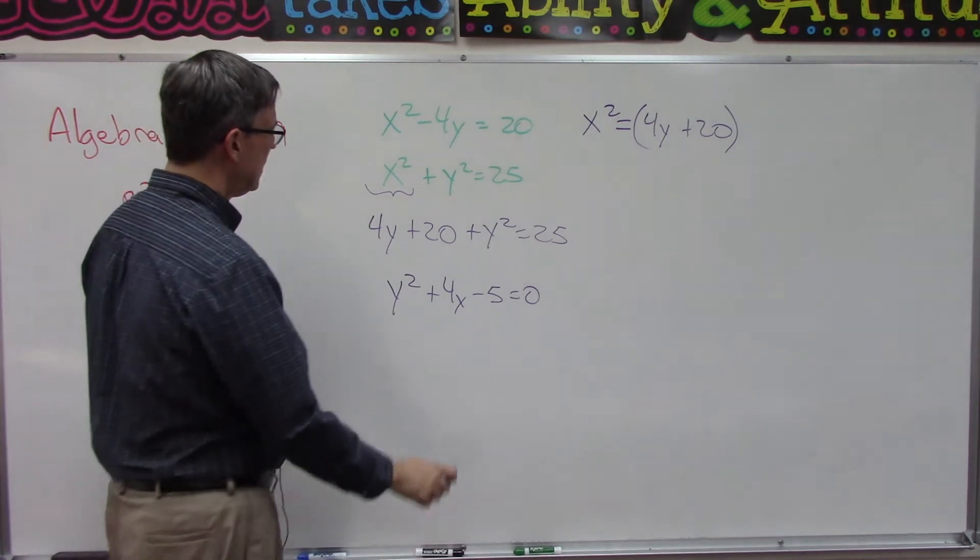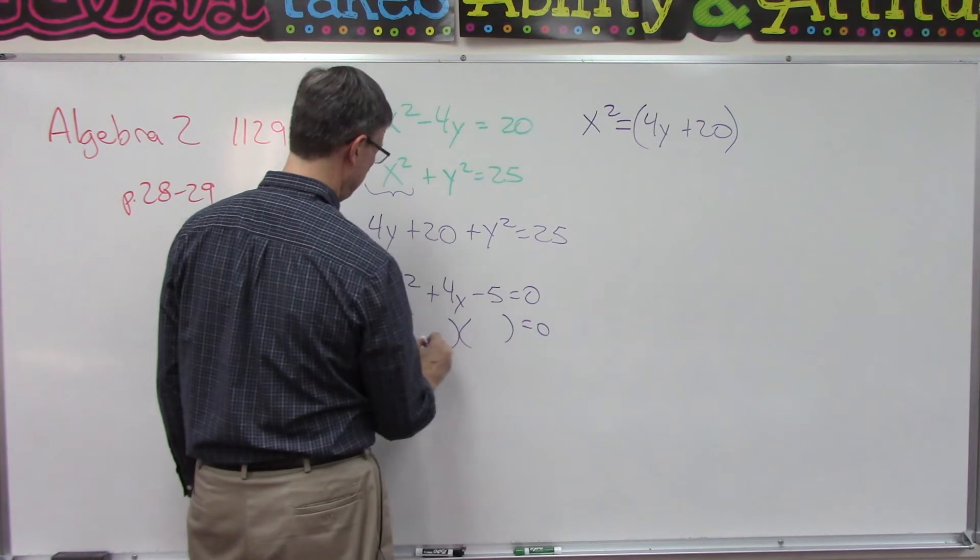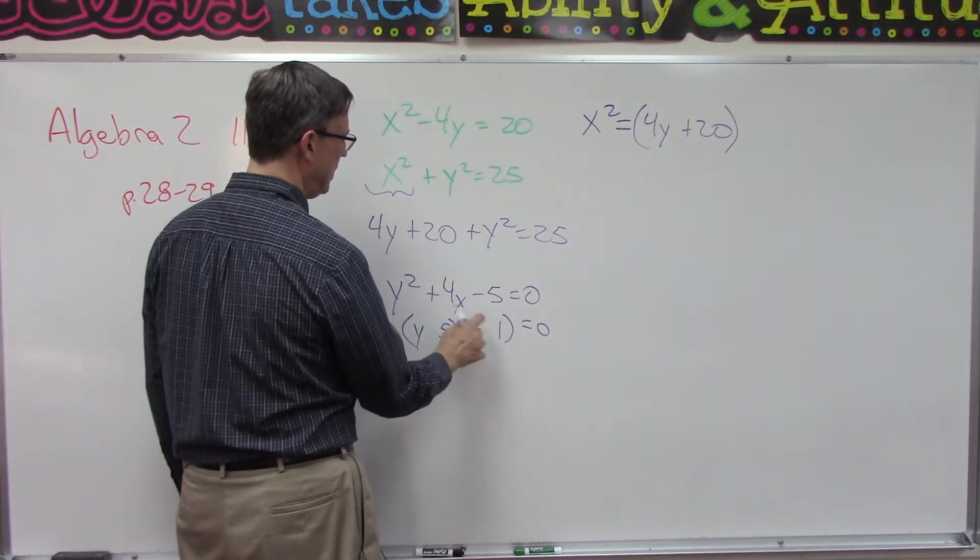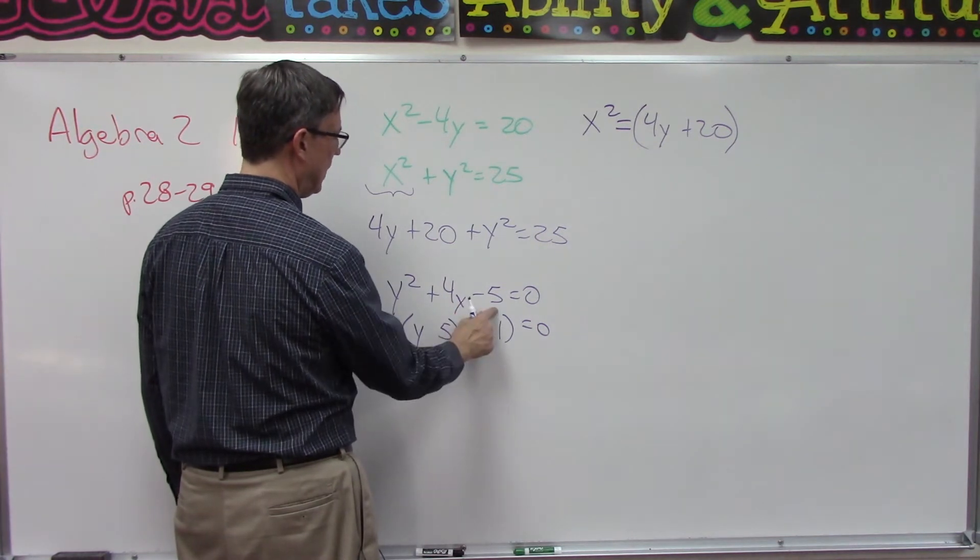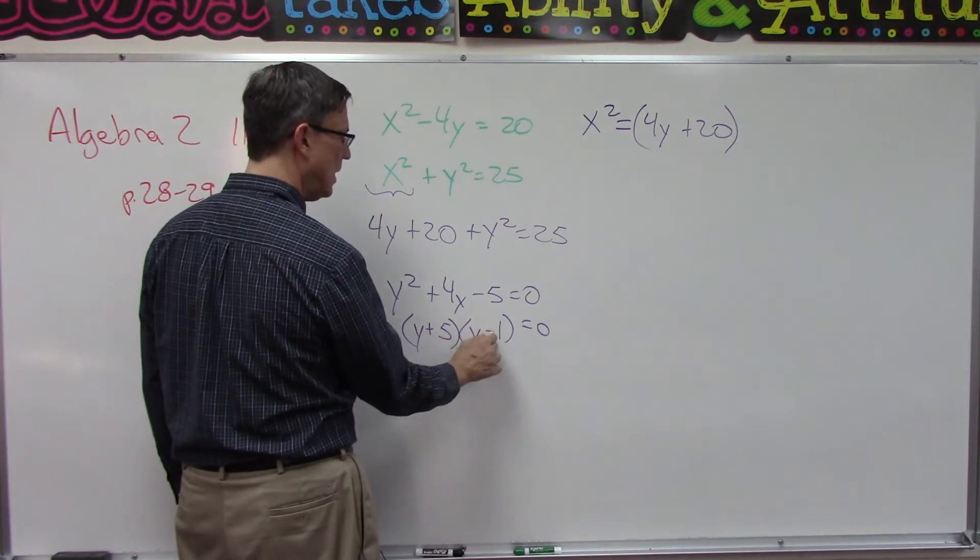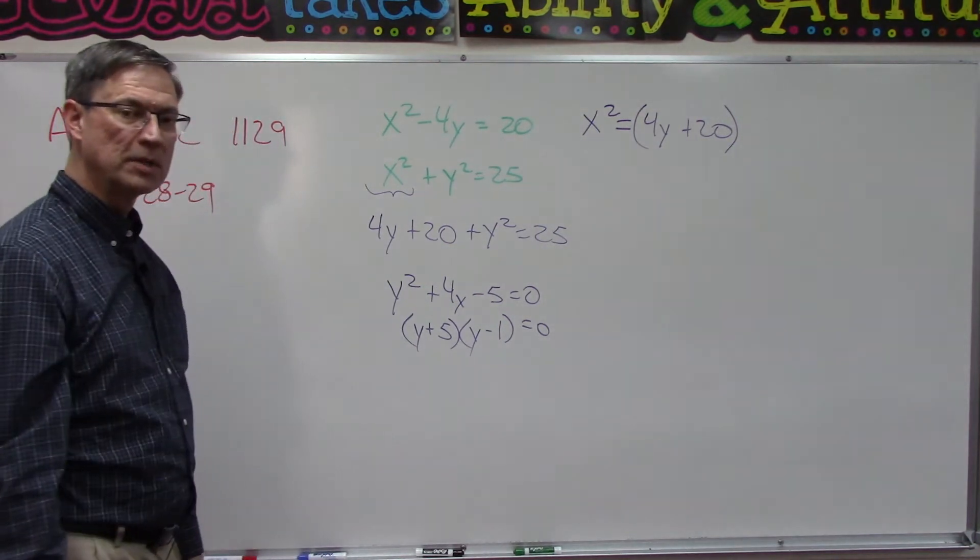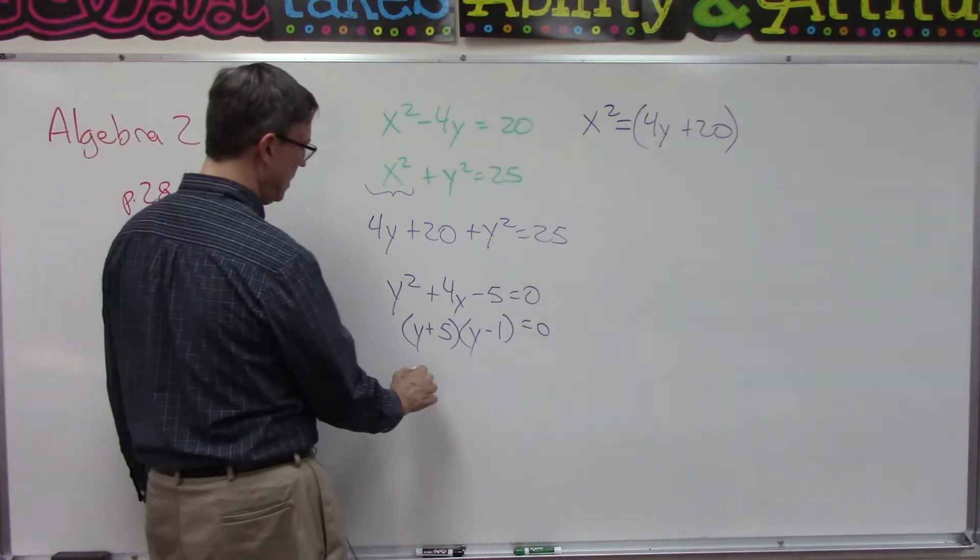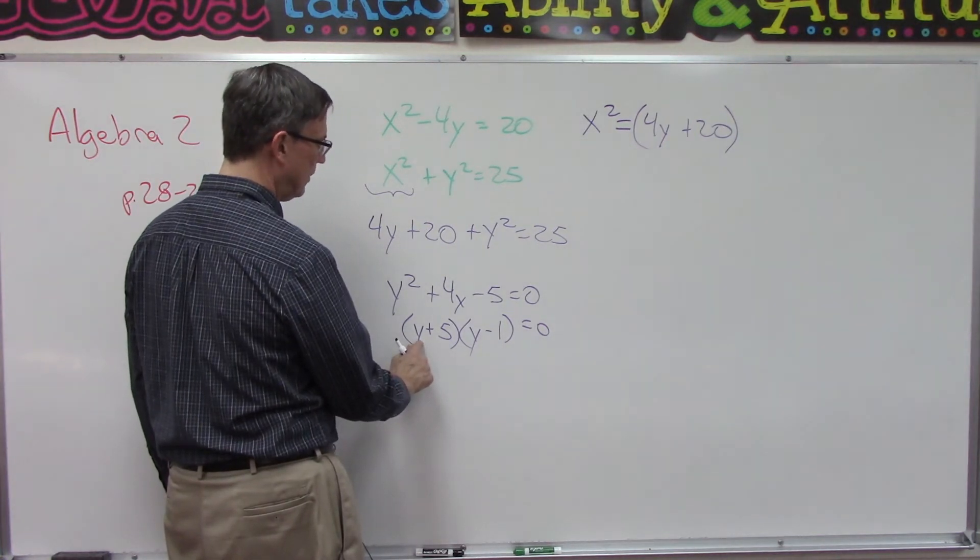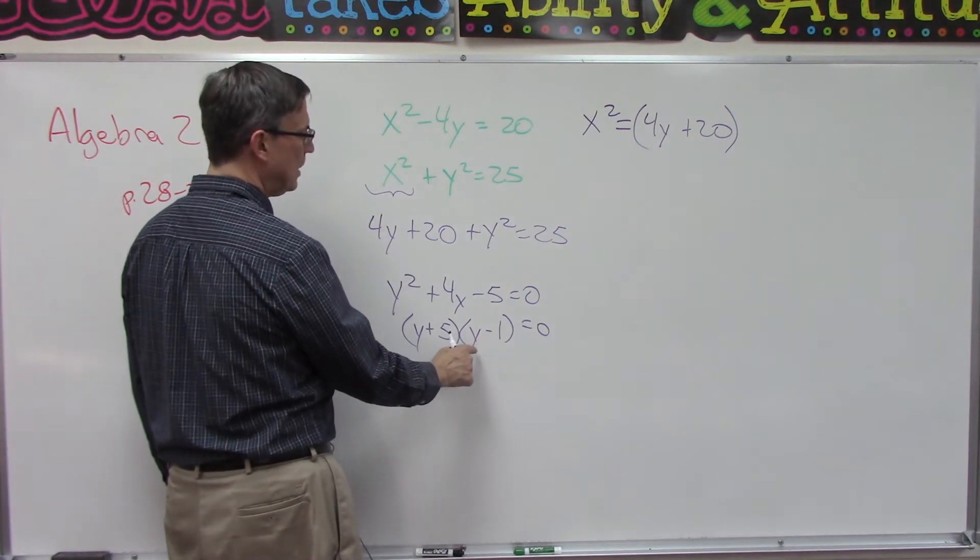All right, then we want to factor that and get two values for y. So it looks like five and one would give me five for the last term. To get this middle term to be positive I need to make this positive and that negative. If you do the foil method you'll see that that will work out. So what does that give us then for y?